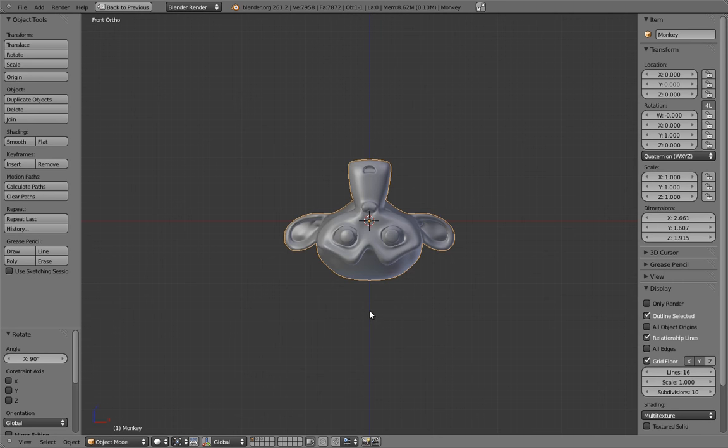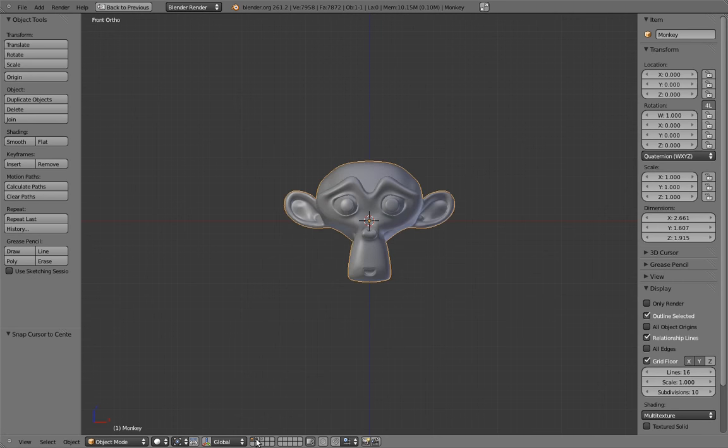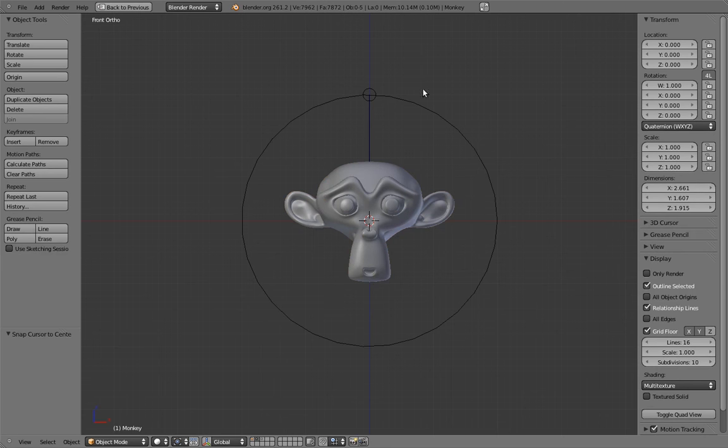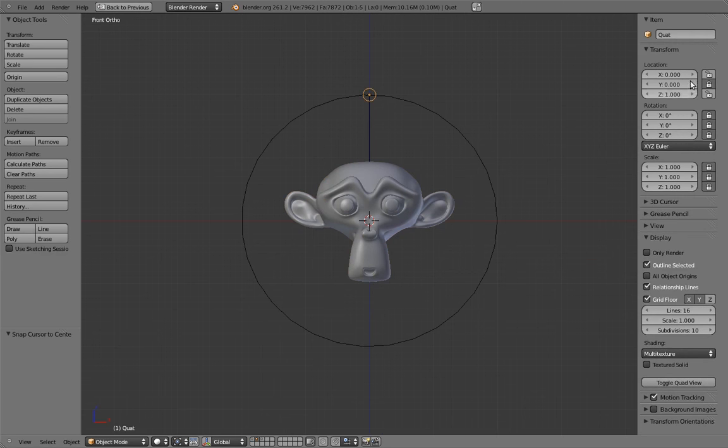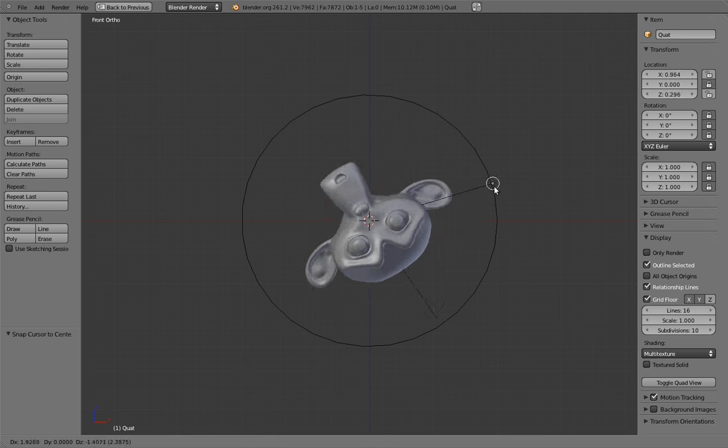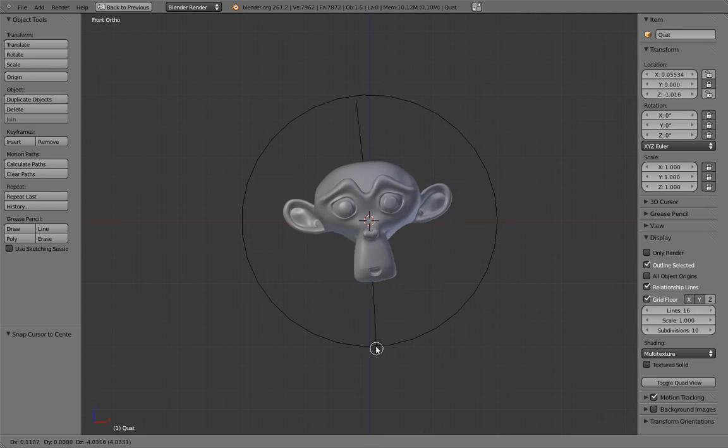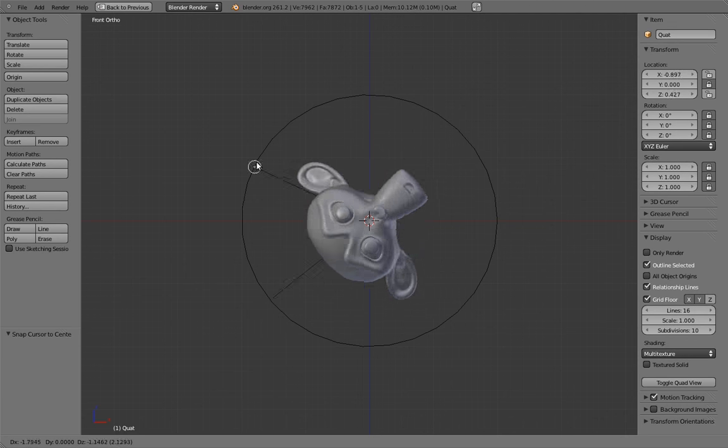And I can take this even a step further. On another layer, I've set up a weird little rig. All it does is take the location of this empty and plug it into the quaternion values of the monkey head. As I move the empty around, you can see that the monkey head rotates twice as much as the angle the empty creates. Wild, eh?